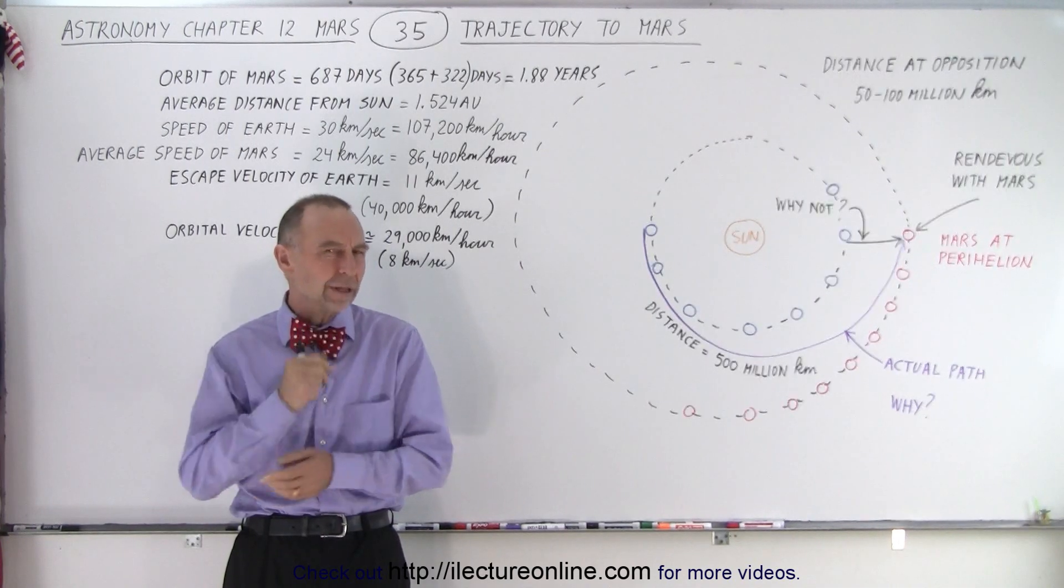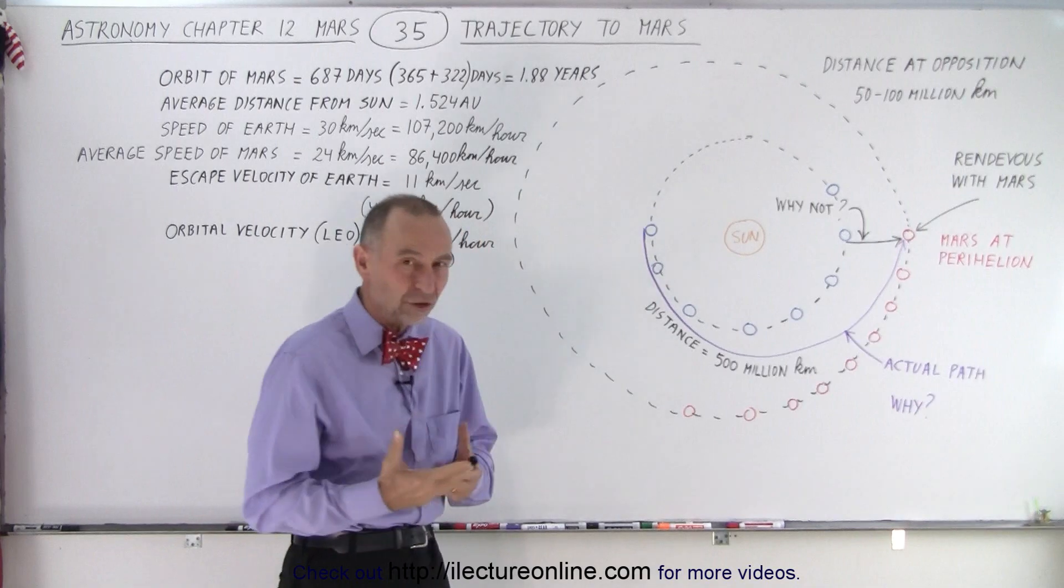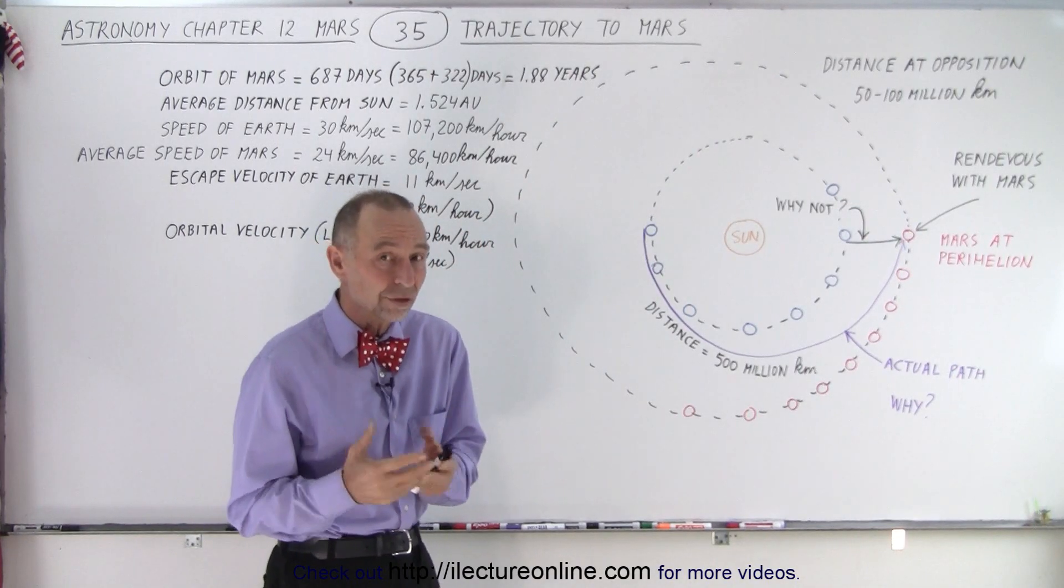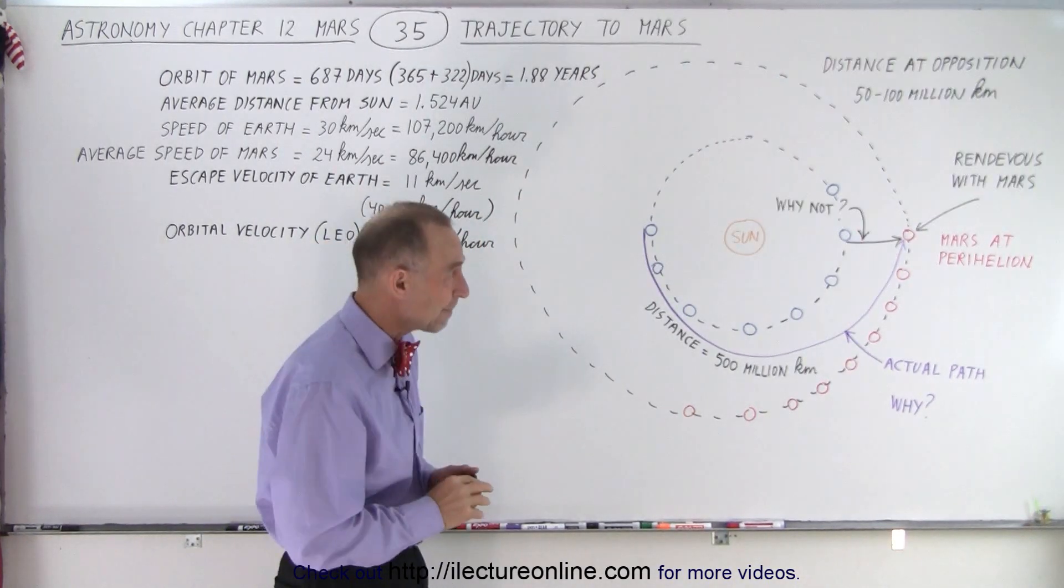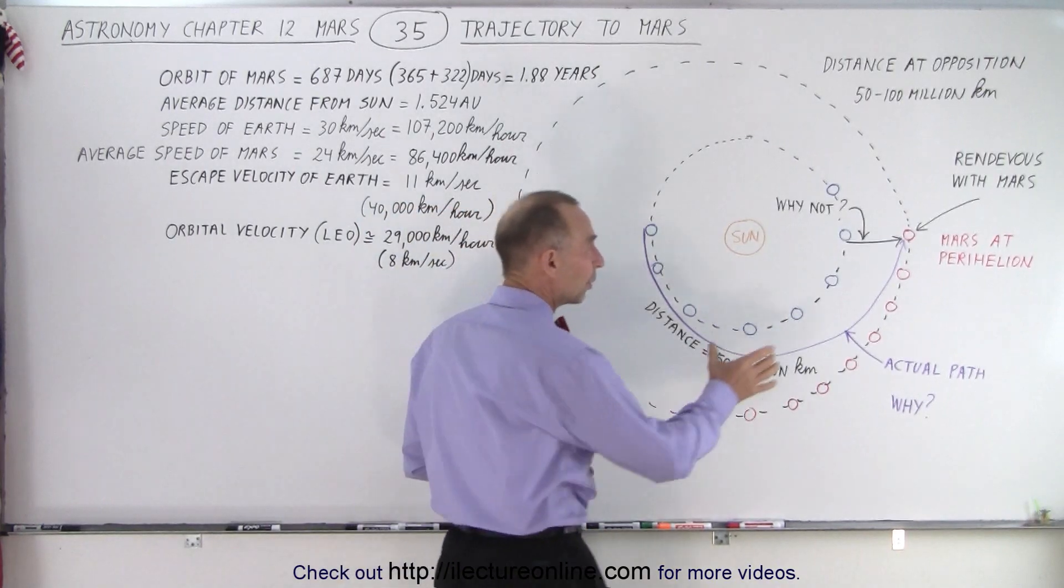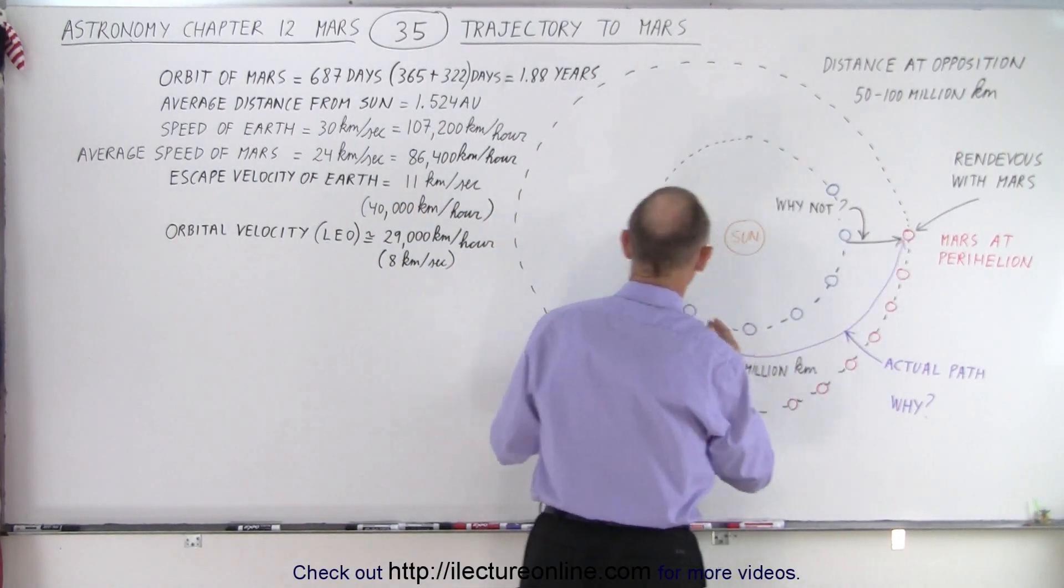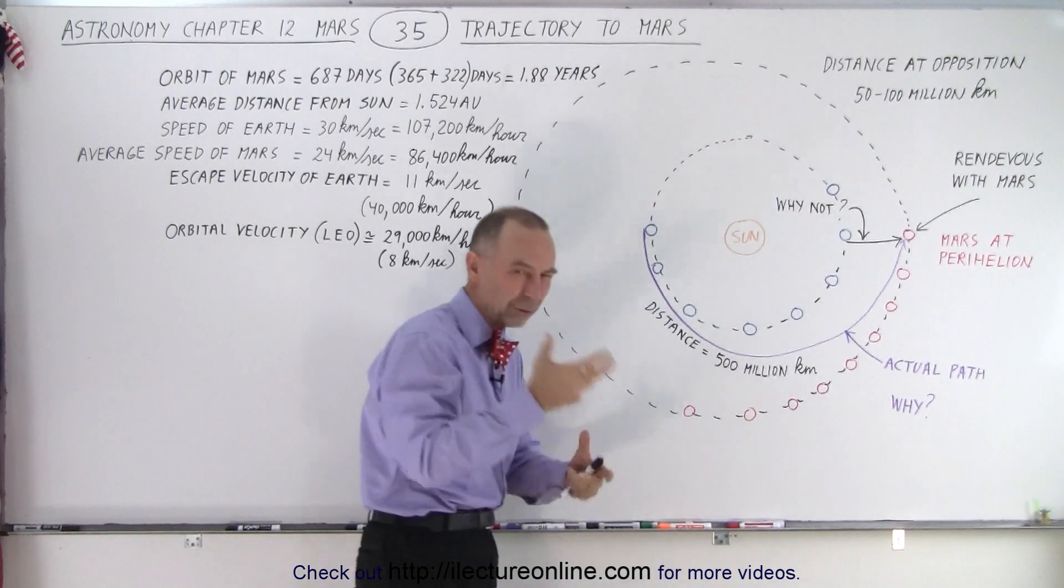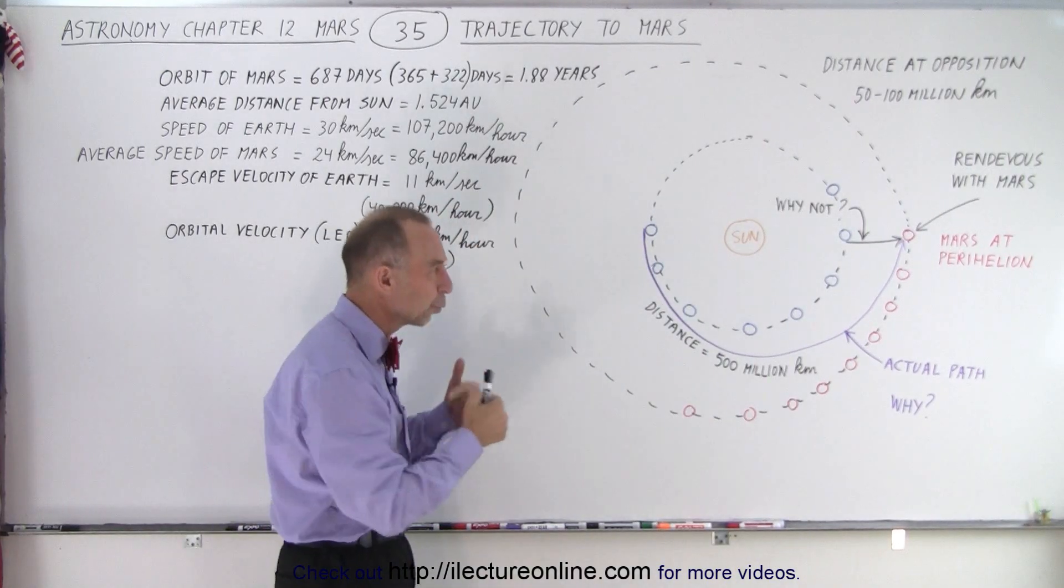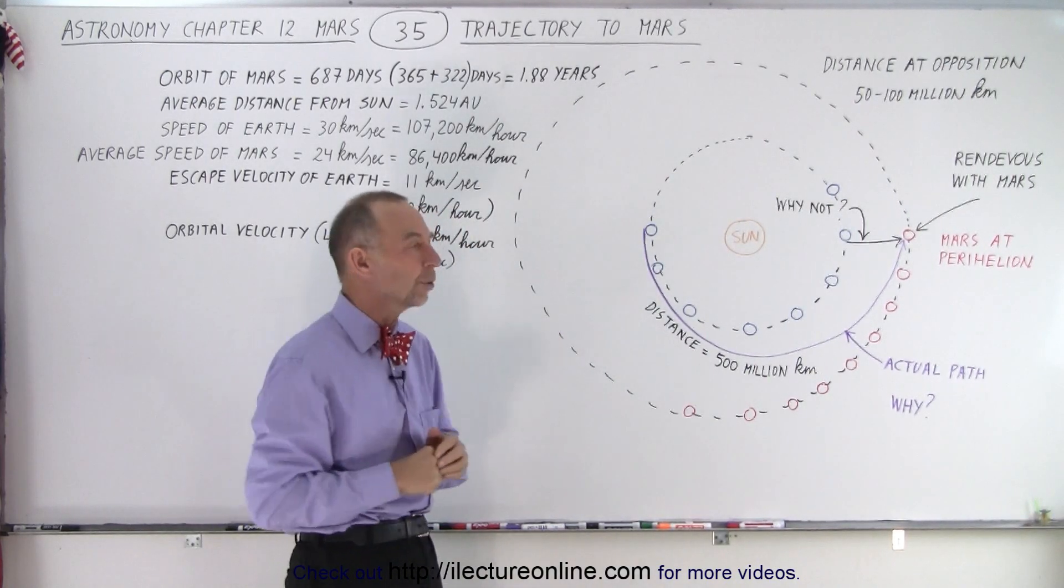But it's also very elliptical. In other words, the eccentricity of Mars is quite high. It has the highest eccentricity of all the planets except for Mercury. And notice that at some point, Mars is very close to the Earth, and at other points, Mars is very far away from the Earth. And of course that changes depending upon where Mars and Earth is in their orbits.